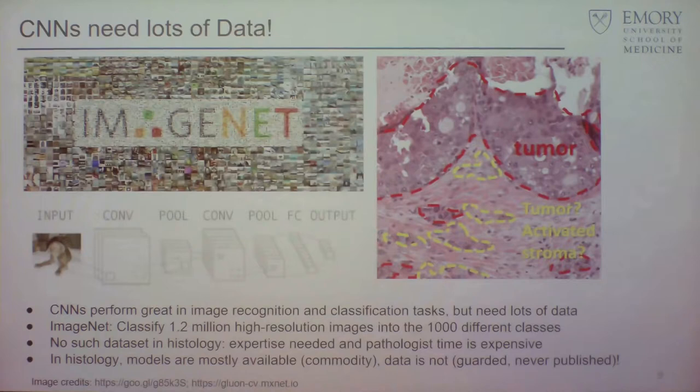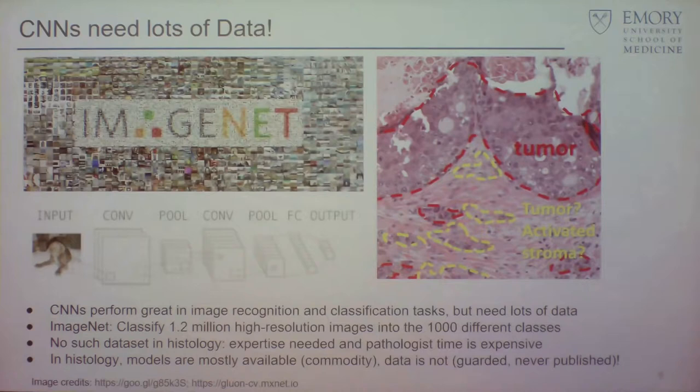Most people just do analysis on a small set of locally annotated examples. I saw a paper in Transactions on Medical Imaging — a big journal — based on six slides. The lack of data is, in many people's opinion, really limiting the field of computational histology. These things need data, and we don't have data.